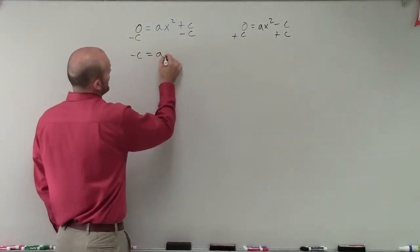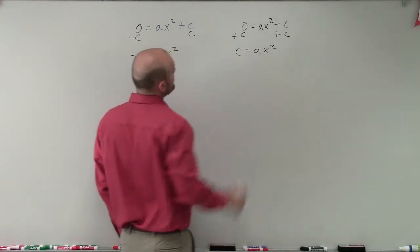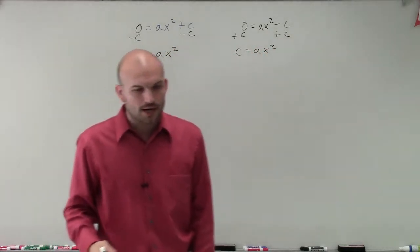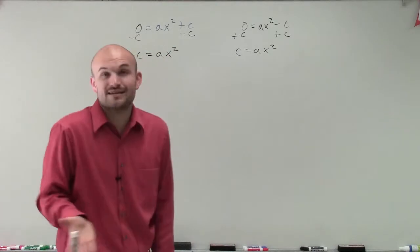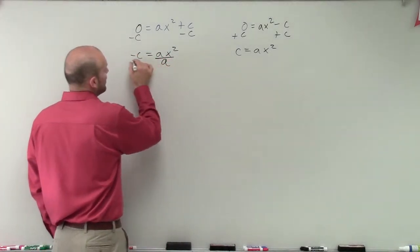Therefore, I'd have negative c equals a times x squared. Now remember, sometimes a is going to be 1, right? But still, let's pretend a is a number other than 1.